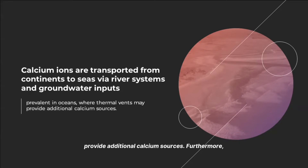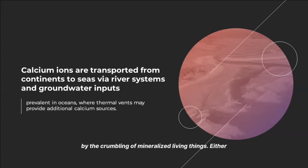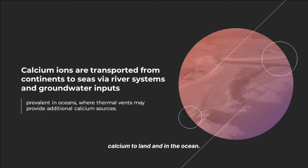Furthermore, calcium is used by aquatic ecosystems to generate and support hard structures like shells, pods, and reefs. Calcium is mostly extracted from the bodies of water by the crumbling of mineralized living things. Either solid or liquid atmospheric discharge can supply calcium to land and in the ocean.